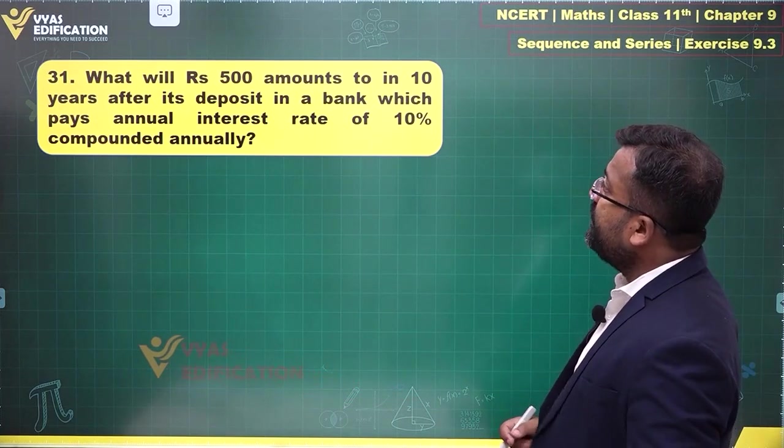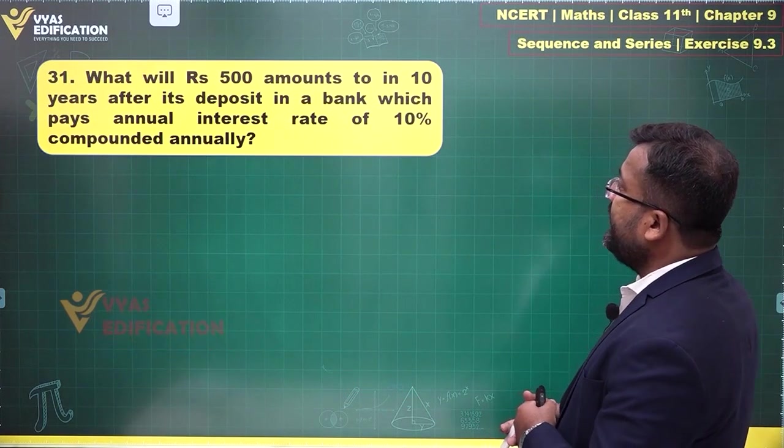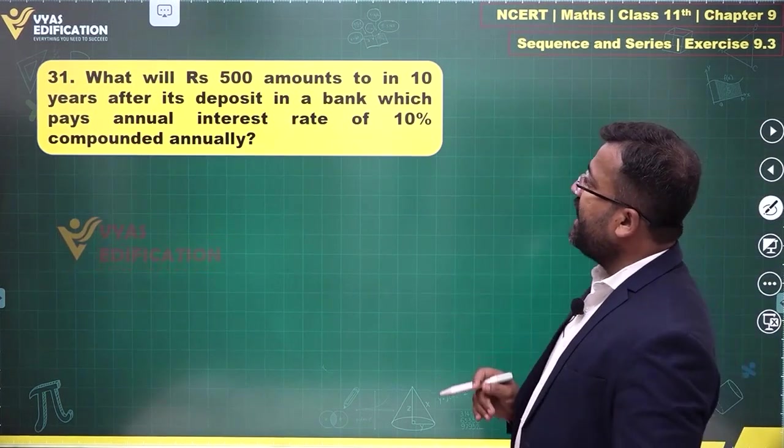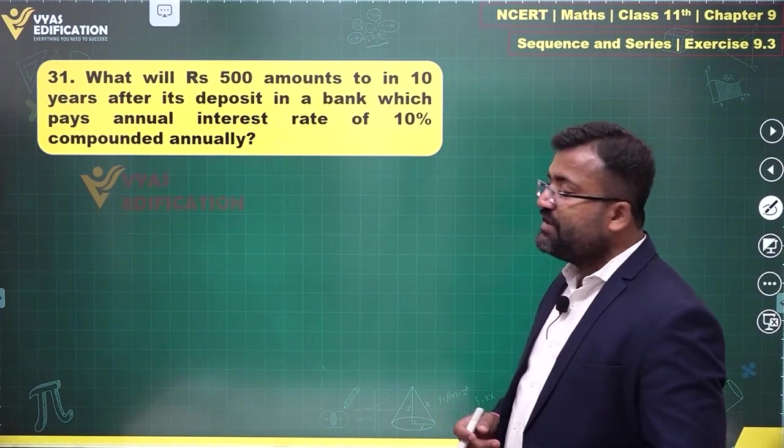Question 31 says: What will Rs. 500 amount to in 10 years after its deposit in a bank which pays an annual interest rate of 10% compounded annually?